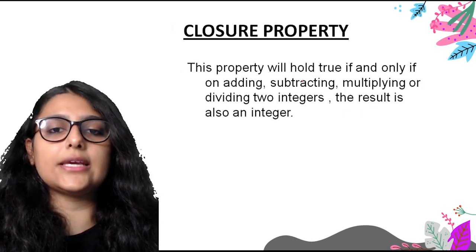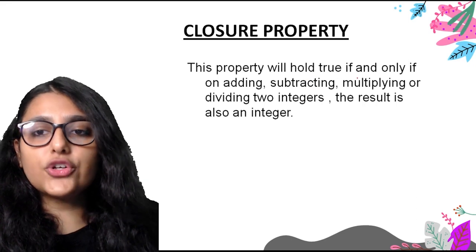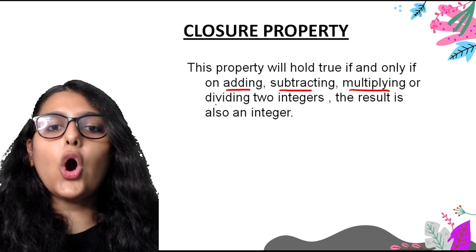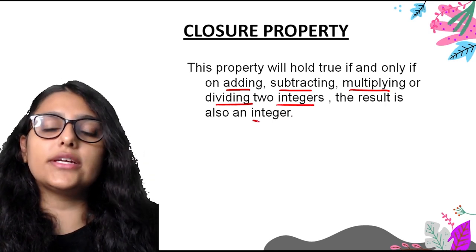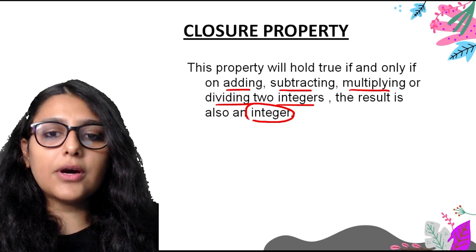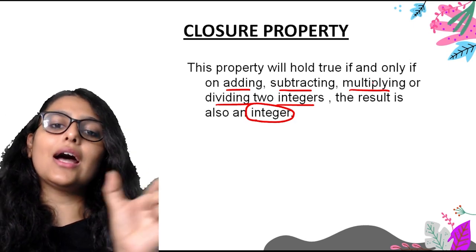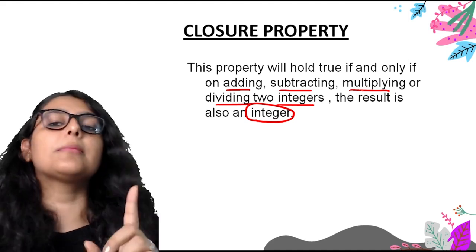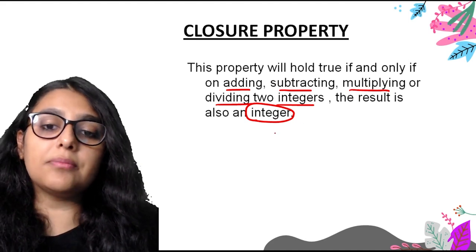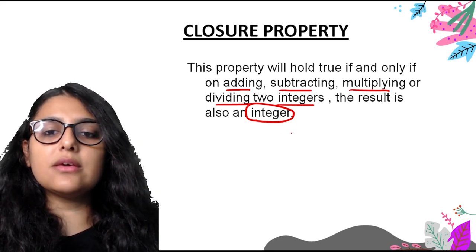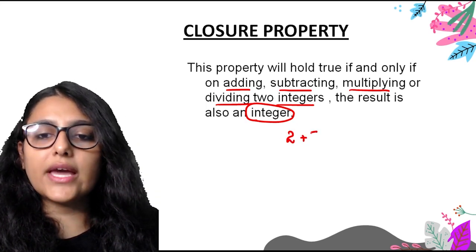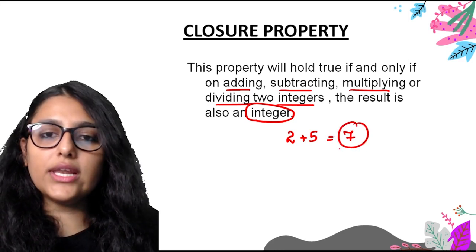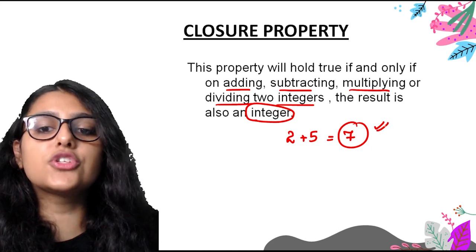First is our closure property. This property holds true if and only if on adding, subtracting, multiplying, or dividing two integers, the result is also an integer. So basically, the answer must itself be an integer. We studied this property for whole numbers in our previous classes. For example, 2 plus 5 equals 7, and 7 is a whole number, so addition holds true.